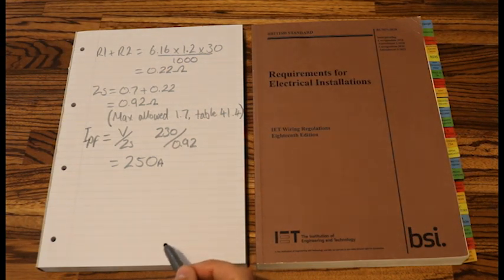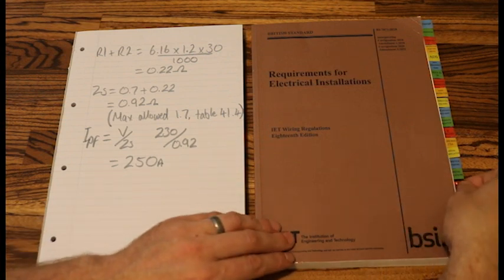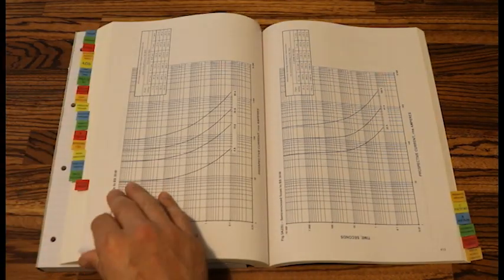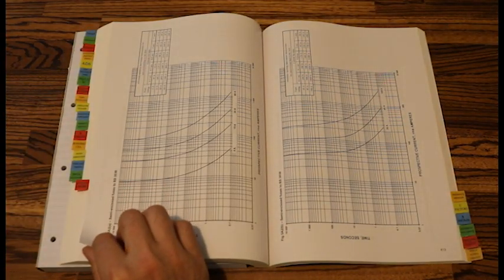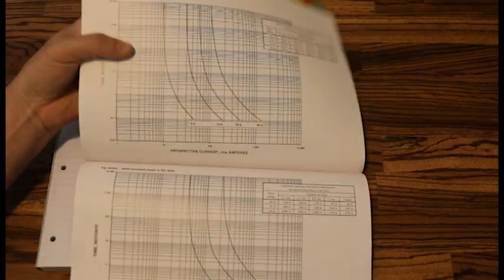Now we need to look at our T value. So if we go to our log-log graphs, they are towards the back. We have our log-log table, they start right towards the back. Now we need to look at the correct one.